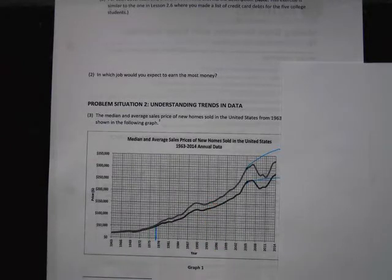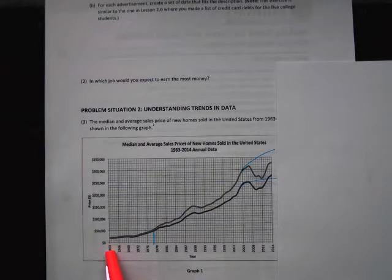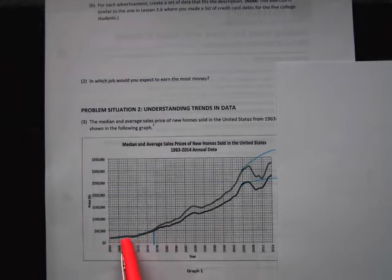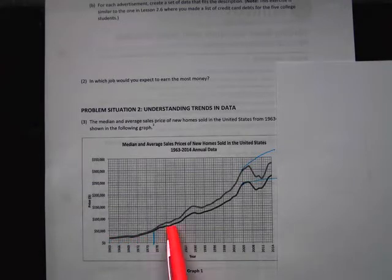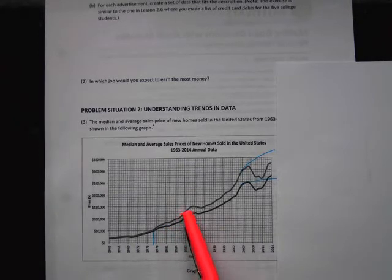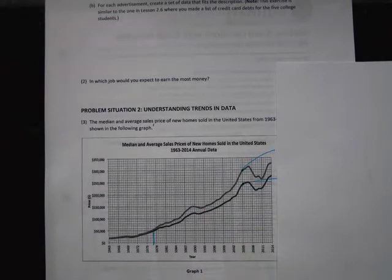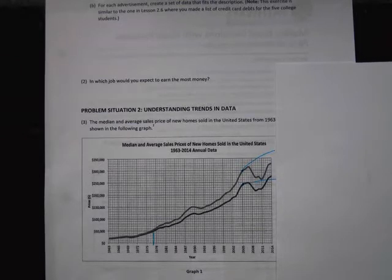Back in the 60s and 70s, the mean and the median were about the same — same prices. But then when we hit maybe the early 80s, all of a sudden there was a split in the data, and the mean started to get a lot higher than the median. So we're going to study why that happened — what happens when the mean is bigger than the median.